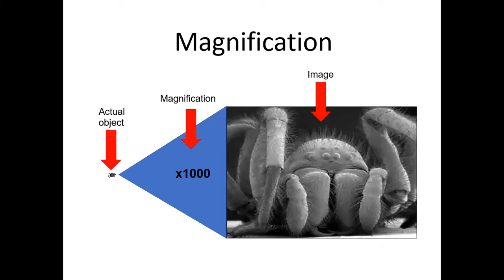Magnification is probably the easiest one and the one you're most familiar with — how much bigger is the picture than the actual thing that really exists. So how much zoomed in is the image? If you've got a picture of a spider much, much bigger than the real thing would be, it has been magnified a thousand times.